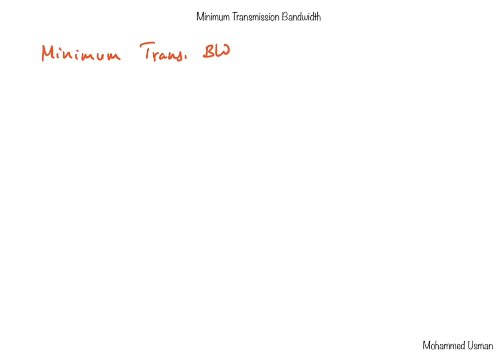Previously we have seen line codes and done an analysis of the minimum transmission bandwidth. We saw that the minimum transmission bandwidth BT should be at least half the symbol rate when using rectangular pulses. For MRE transmission, the transmission bandwidth should be at least N times W divided by logarithm base 2 of M.